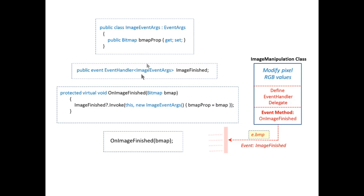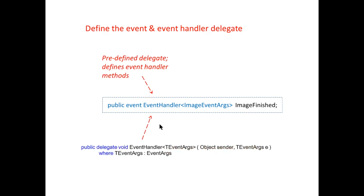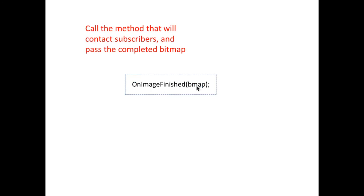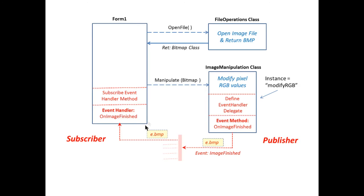Finally, we've defined the class, the event handler delegate, and the method. The last step is simply calling this method and initiating the event — firing off the event handler delegate to notify all the subscribers and pass the bitmap. As soon as the modified bitmap has been generated, we call onImageFinished and notify everybody, passing the bitmap. I hope that helps you understand a little bit more about events and delegates. Take care and have a good day.